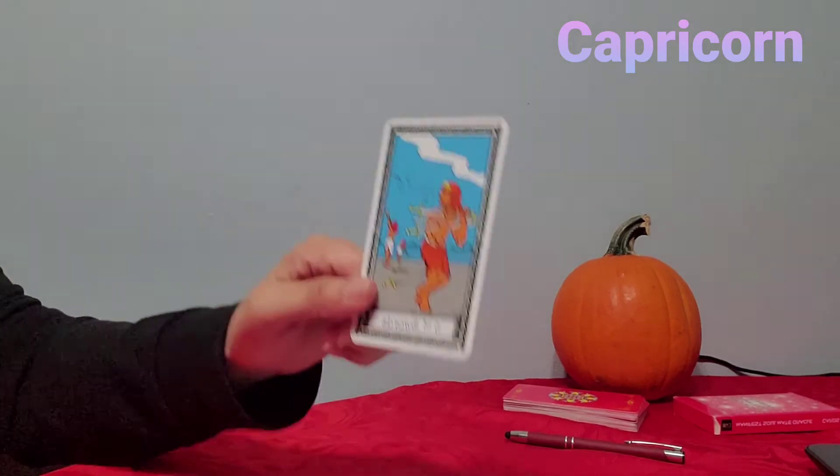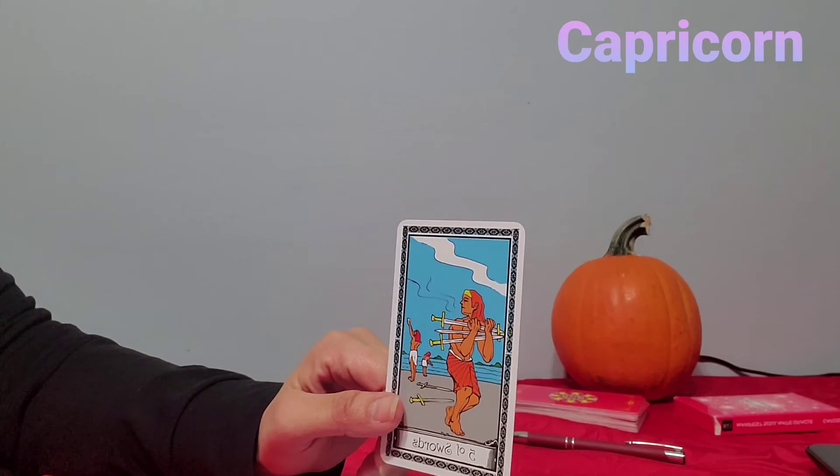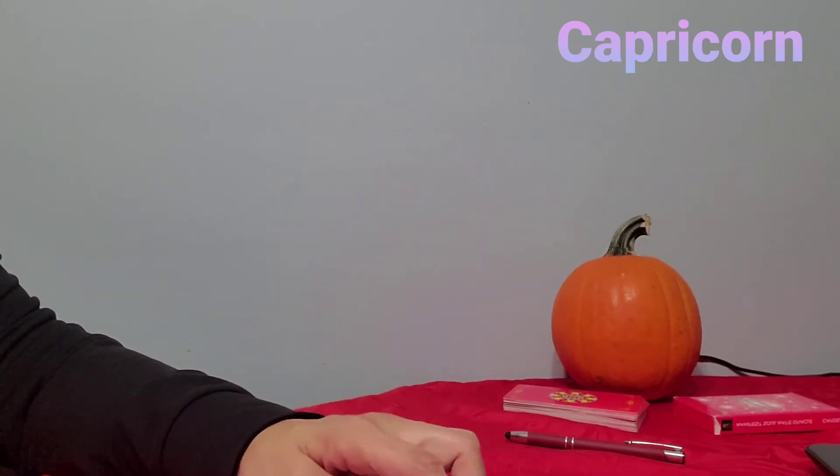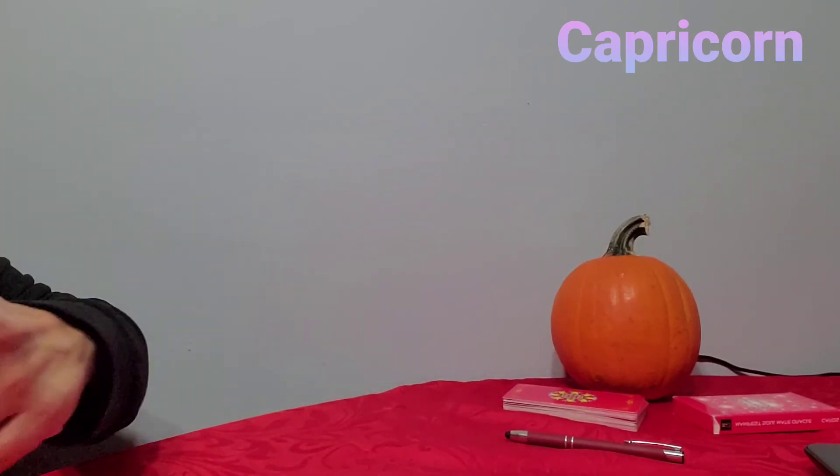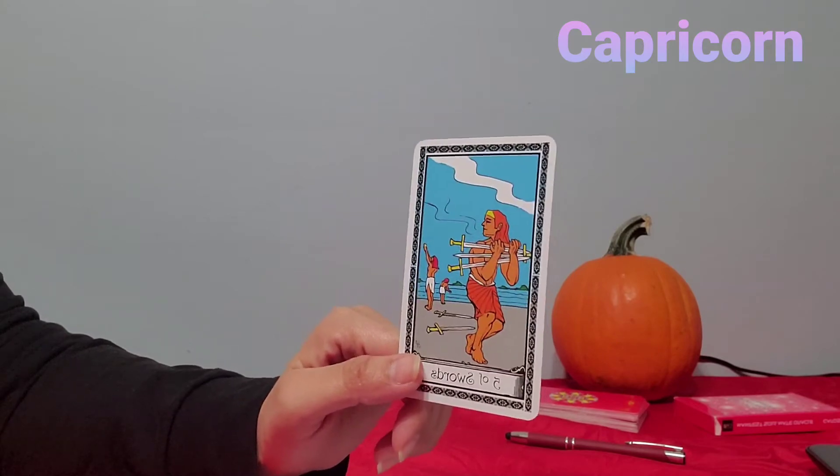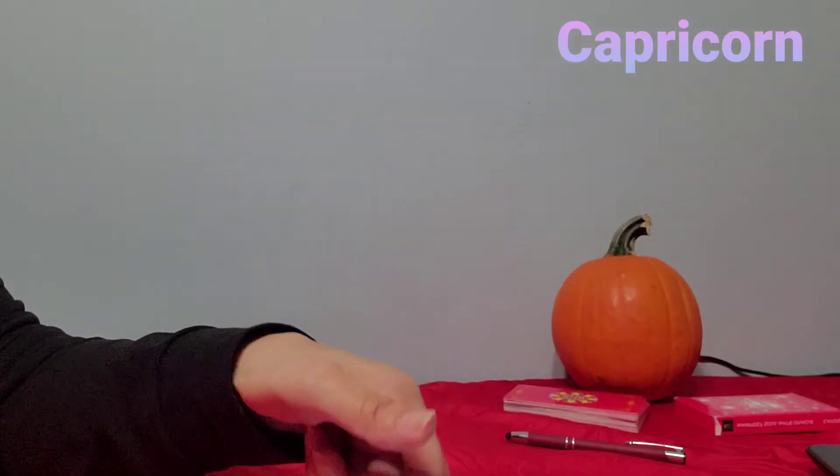Let's see. With the Five of Swords, yep, this person was definitely being very deceptive. They could have been cheating, lying, you know, they're just playing the field, you know. They're looking back at other people like they didn't know what they had in front of them, okay, is what I'm getting with this card. They didn't know what they had in front of them. That's why they kept on looking back.